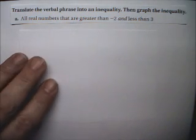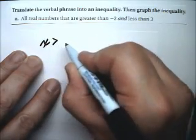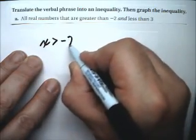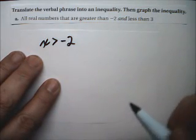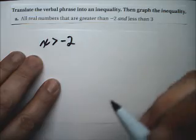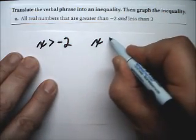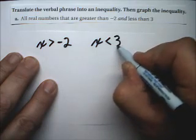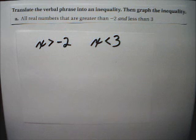Let's see what I mean. It says all real numbers that are greater than negative 2. X is greater than negative 2. That's all real numbers that are greater than negative 2 and less than 3. So X also has to be less than 3. And it's an AND condition, so we can put these all together into one.